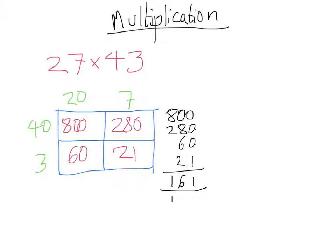So we've got 1161. That's one method for doing long multiplication. Another way is to do the column method.